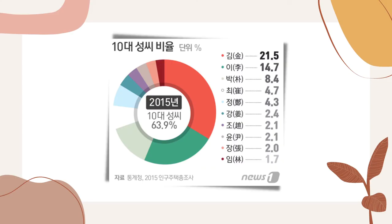Of these 286 surnames, Kim, Lee, and Park make up 45% of South Korea's population. Does this mean that Korea is just made up of 286 families? No, and I'll get into explaining why.